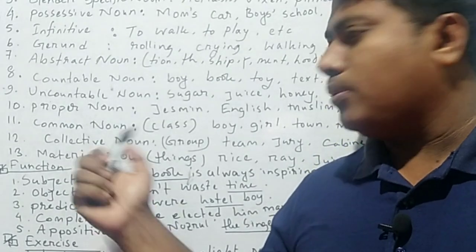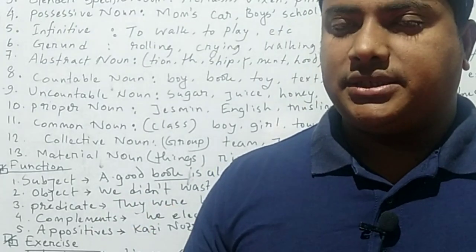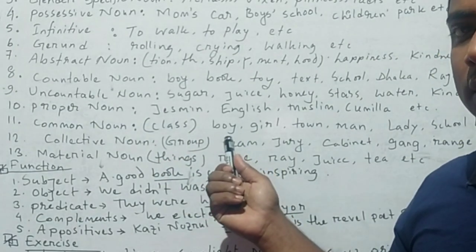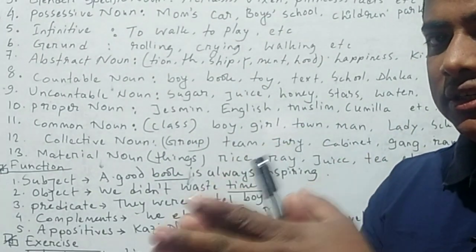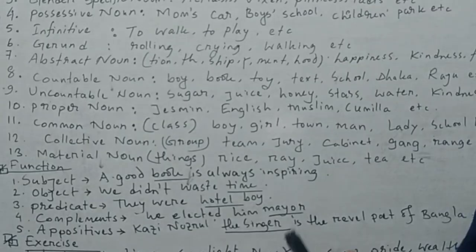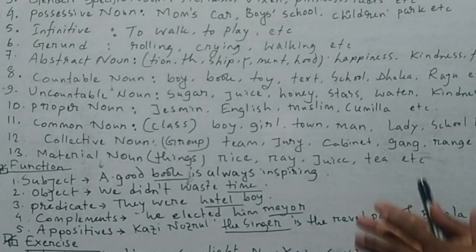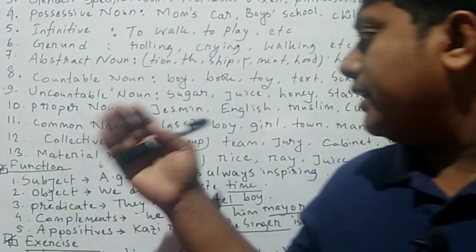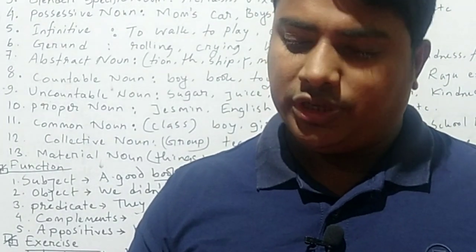Another type is the common noun. A common noun expresses a class — for example, 'boy' indicates all boys as a class, and 'girl' indicates all girls as a class. Common nouns refer to a general category rather than a specific individual.